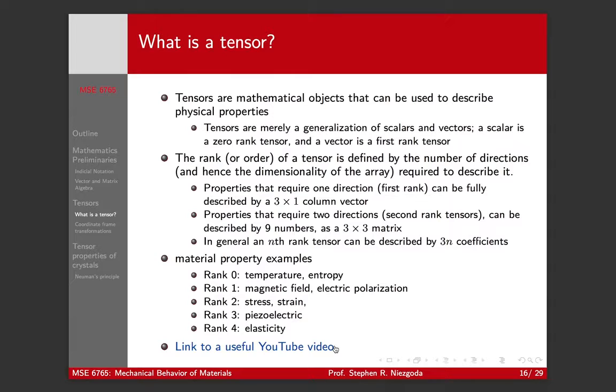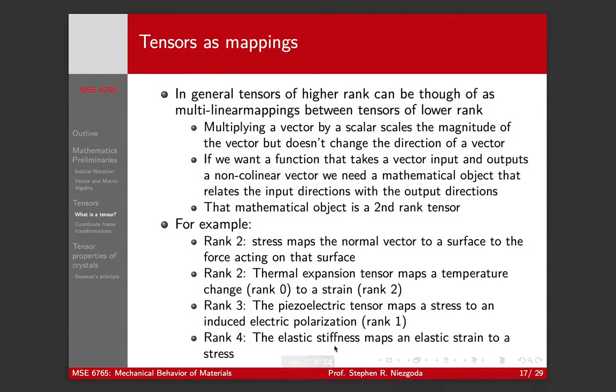Back to mappings, linear transformations as mappings. Technically tensors are bilinear mappings. The most useful way to think of tensors is as mappings between tensors of lower rank. So multiplying a vector by a scalar scales the magnitude of the vector but doesn't change the direction. A first rank tensor times a zero rank tensor gives you a first rank tensor.